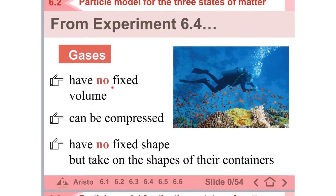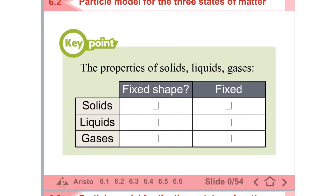For gases, just like liquid. Let's look at a key point. For the first column it's easy. For the second column — for solid, it will have a fixed shape and volume. But for liquids, it only has a fixed volume. For the last one, for gases, it has nothing fixed.